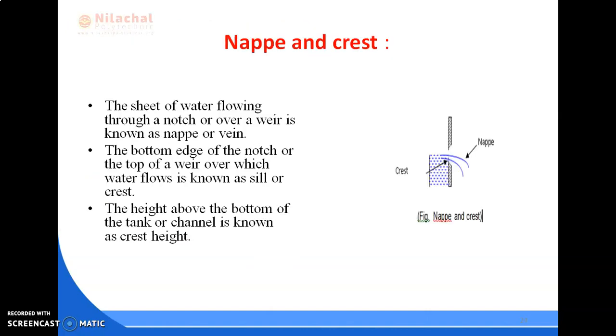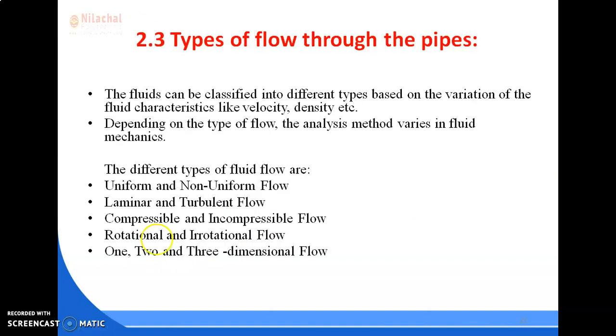Next, another definition which is necessary to know: nappe and crest. This is known as nappe and the top portion is known as crest. The sheet of water flowing through a notch or over a weir is known as nappe or vane. The bottom edge of the notch or the top edge of a weir over which water flows is known as sill or crest. The height above the bottom of the tank or canal is also known as crest height.